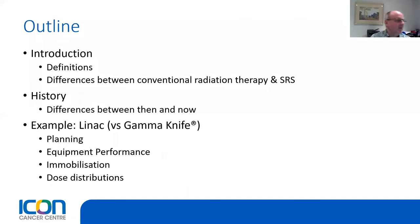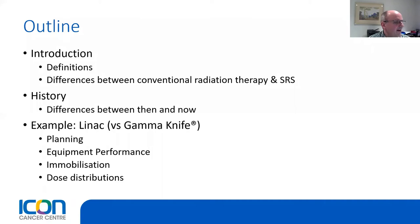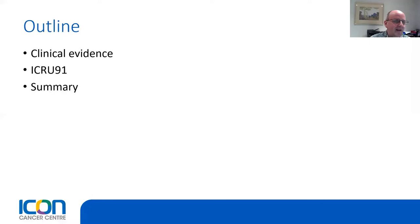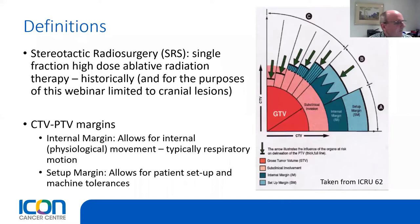Let me give a brief outline of this evening. I'll start with a relatively long introduction covering some bread-and-butter concepts to get our mindset in the right space — definitions and differences between conventional radiotherapy and stereotactic radiosurgery. I'll then talk about the history of SRS, run through an example comparing a LINAC with a gamma knife to see whether margins are the same based on various factors, discuss clinical evidence, and finally ICRU-91, then summarize.